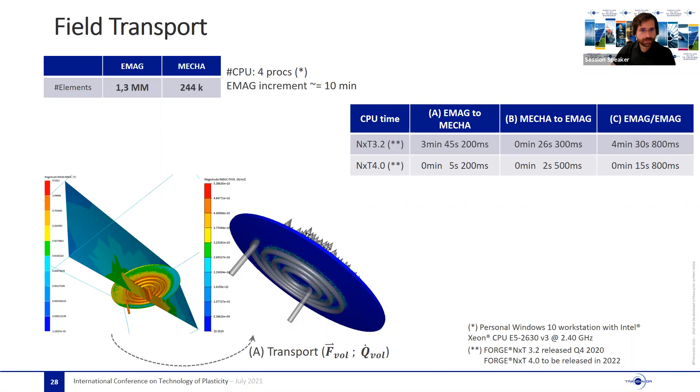From the mechanical solver to the electromagnetic solver, we went from 26 seconds to two seconds. And if the electromagnetic mesh needed to be recreated because of the deformation, it implied that we needed to recover the previous electromagnetic field. Then here also, we are talking about four minutes that diminishes to 15 seconds. So this shows that in the latest version, in the worst case scenario, communication could take almost as much as a single electromagnetic increment, while now it takes less than 3% of this CPU time.